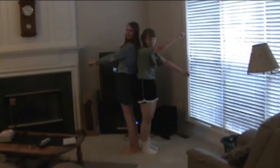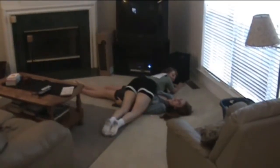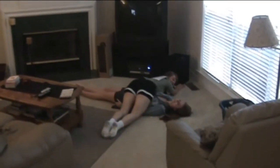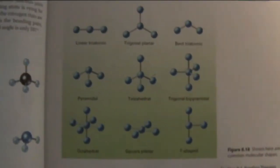We're trigonal bipyramidal. We're octahedral. We're square planar. She's T-shaped. This is what they look like in molecule form.